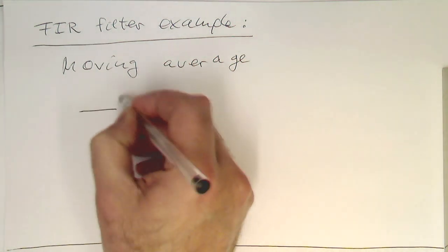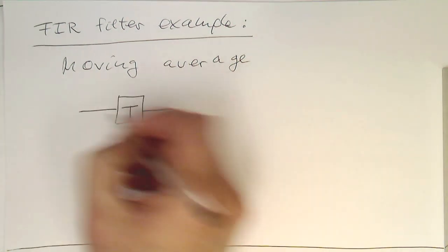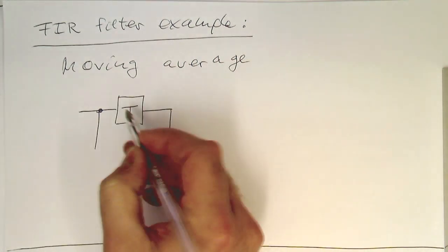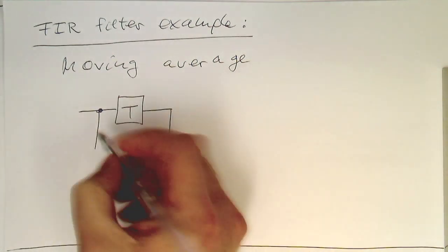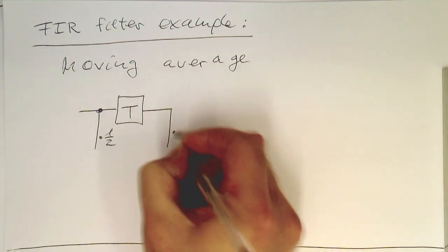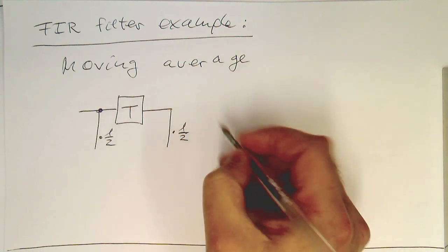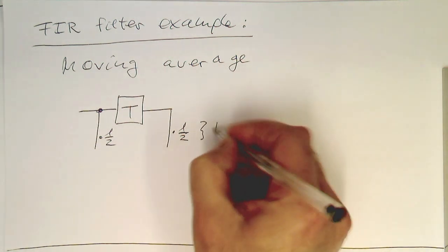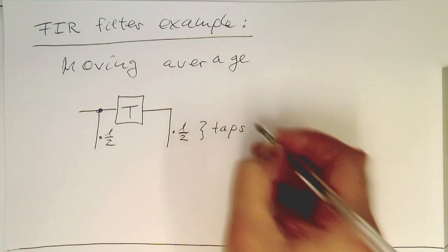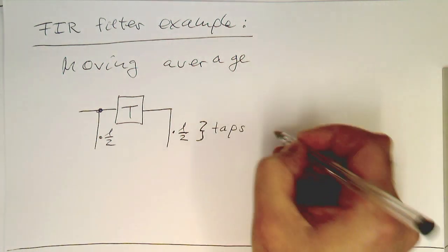A moving average in FIR terms is just the following: we've got one delay step. We're multiplying this output by half, and this one also by half. These are very often called taps — like water taps — so they're halfway open.